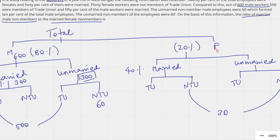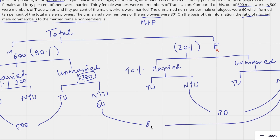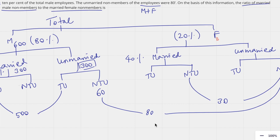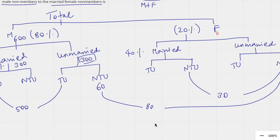The unmarried non-members of the employees — referring to both male and female — were 80 in total. We already know that unmarried male non-members were 60. So the unmarried female non-members is the balancing figure: 80 minus 60, which is 20. The total female non-members of trade union is 30, and unmarried female non-members is 20, so married female non-members is 30 minus 20, which is 10.